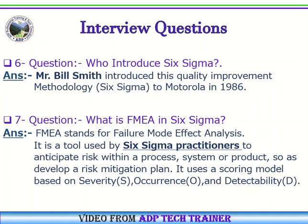Question Number 7: What is FMEA in Six Sigma? Answer: FMEA stands for Failure Mode Effect Analysis. It is a tool used by Six Sigma practitioners to anticipate risk within a process, system or product, so as to develop a risk mitigation plan. It uses a scoring model based on severity, occurrence, and detectability.